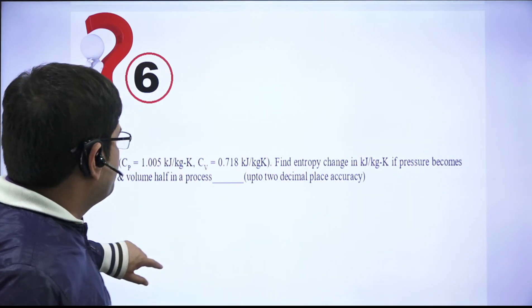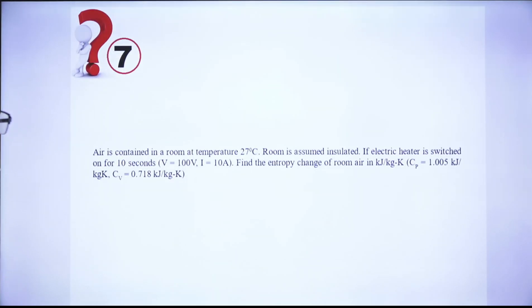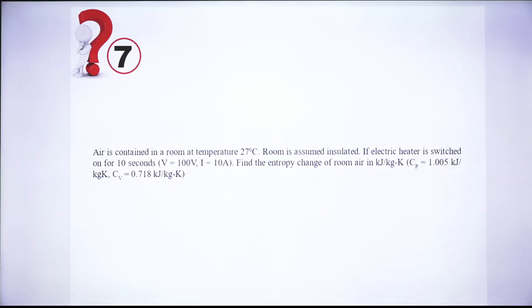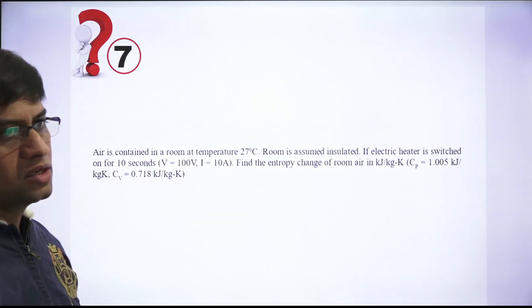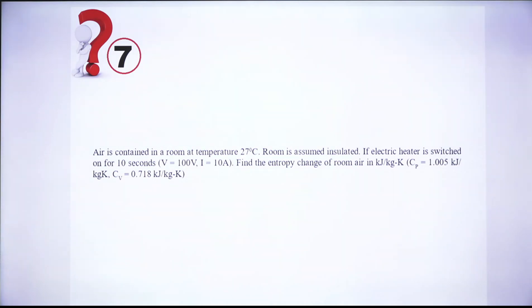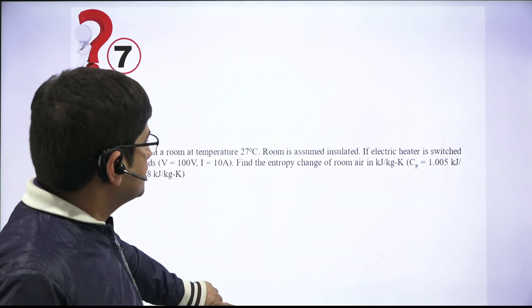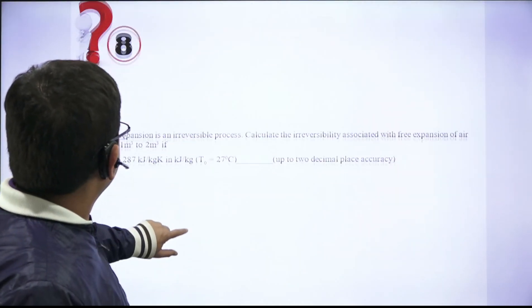Question 7: Air is contained in an insulated room at 27°C. An electric heater is switched on for 10 seconds at 100 V and 10 A. Calculate the entropy change of the room, given cp and cv values. The electric heater converts electrical work to internal energy, raising the room temperature, from which entropy change can be determined.